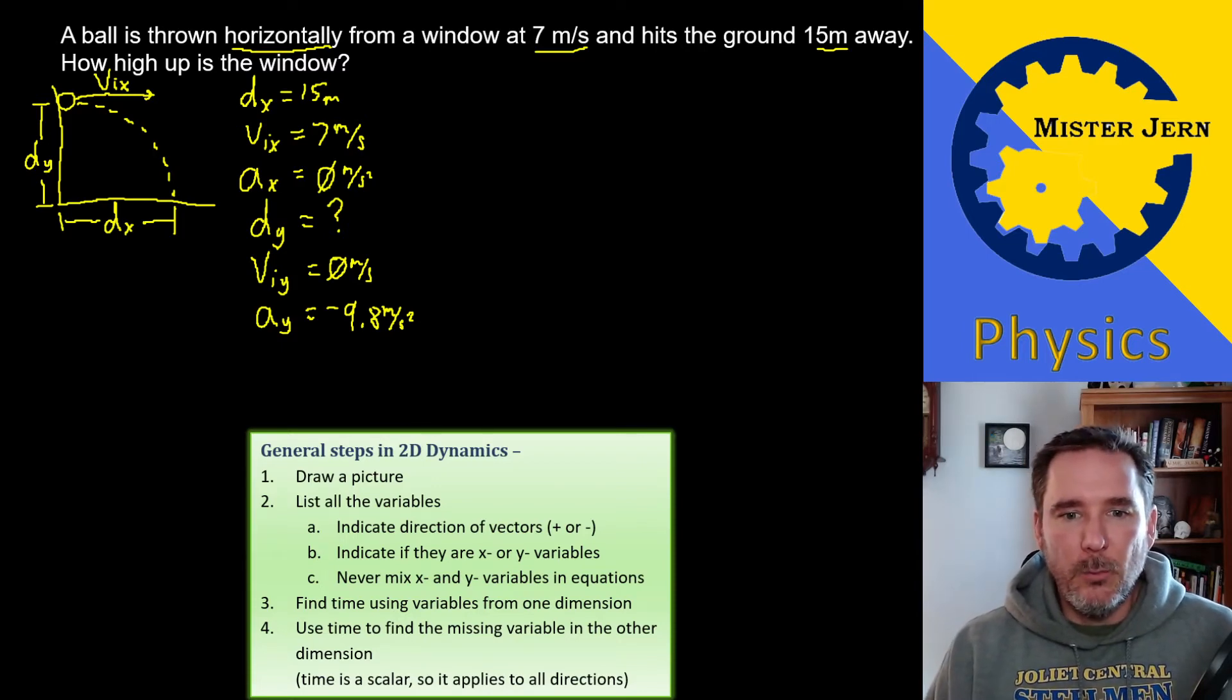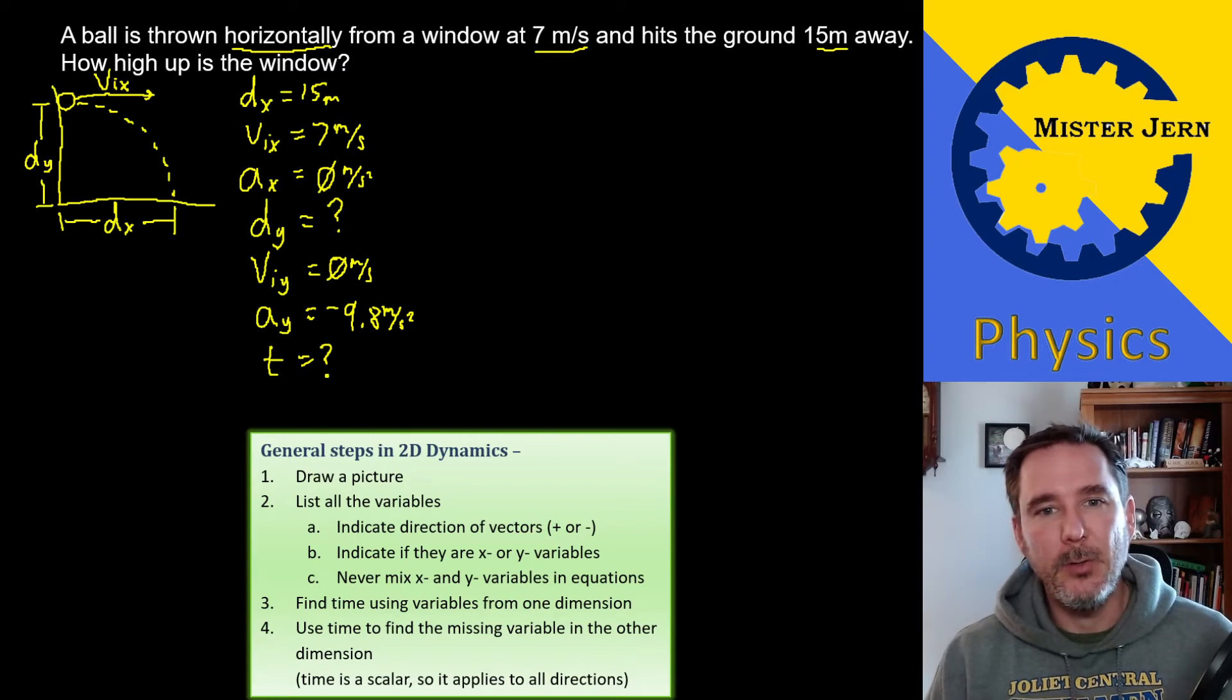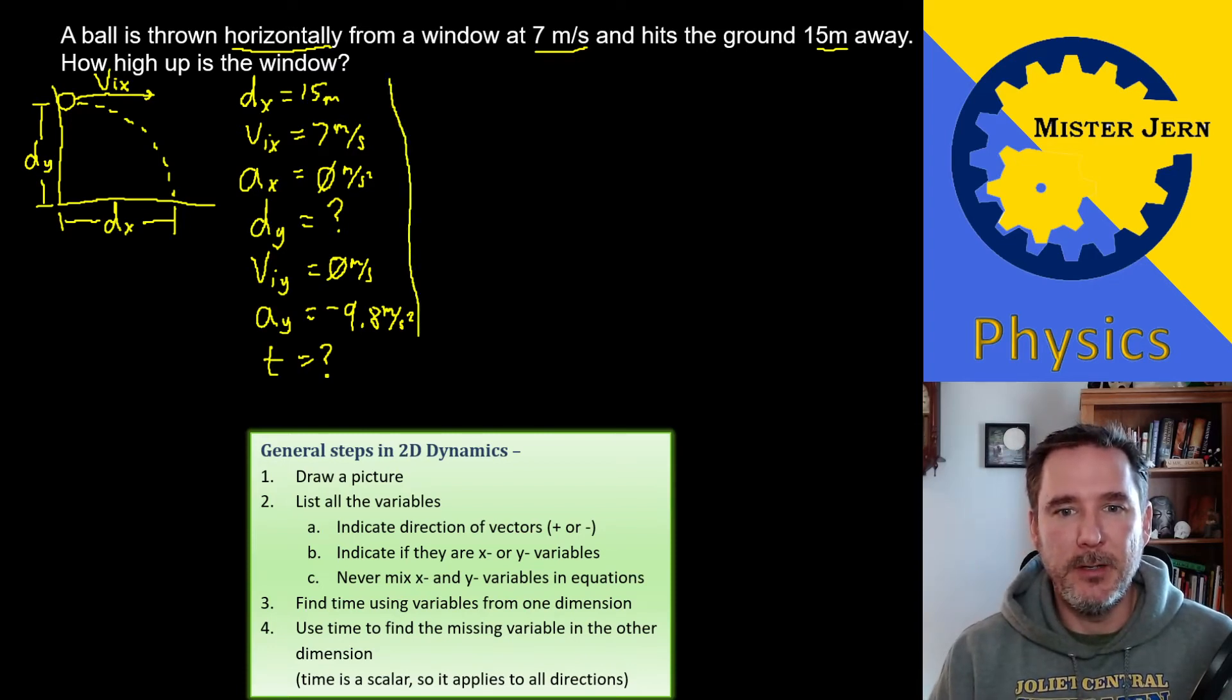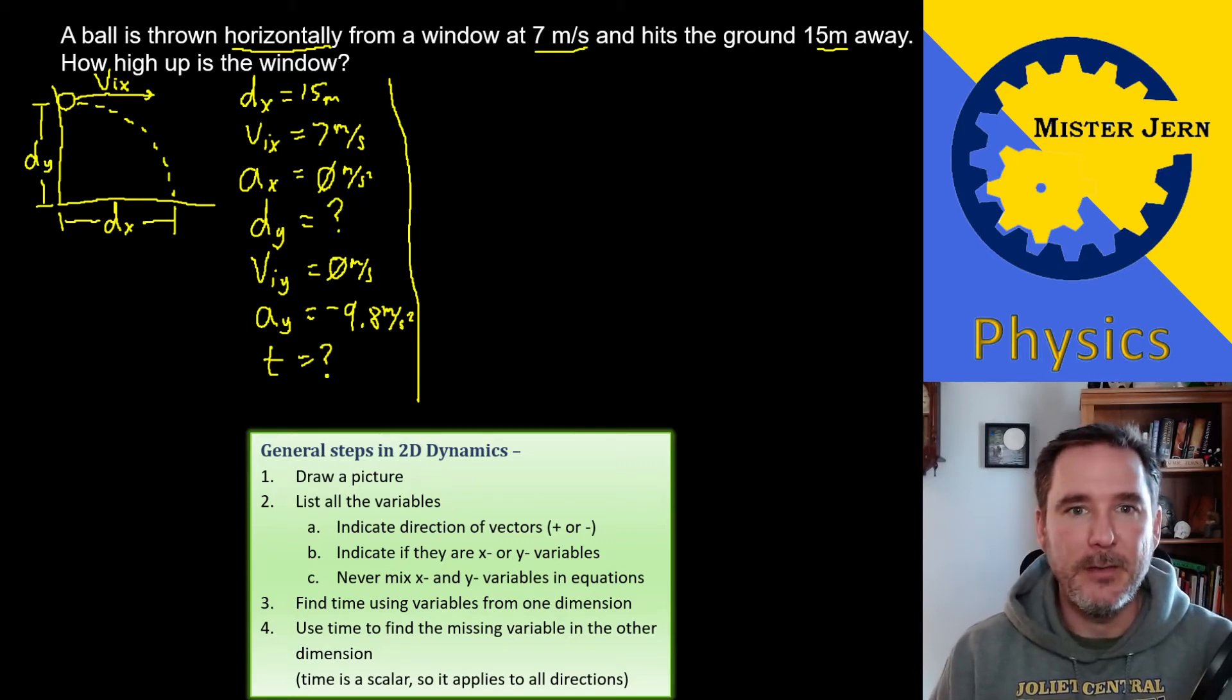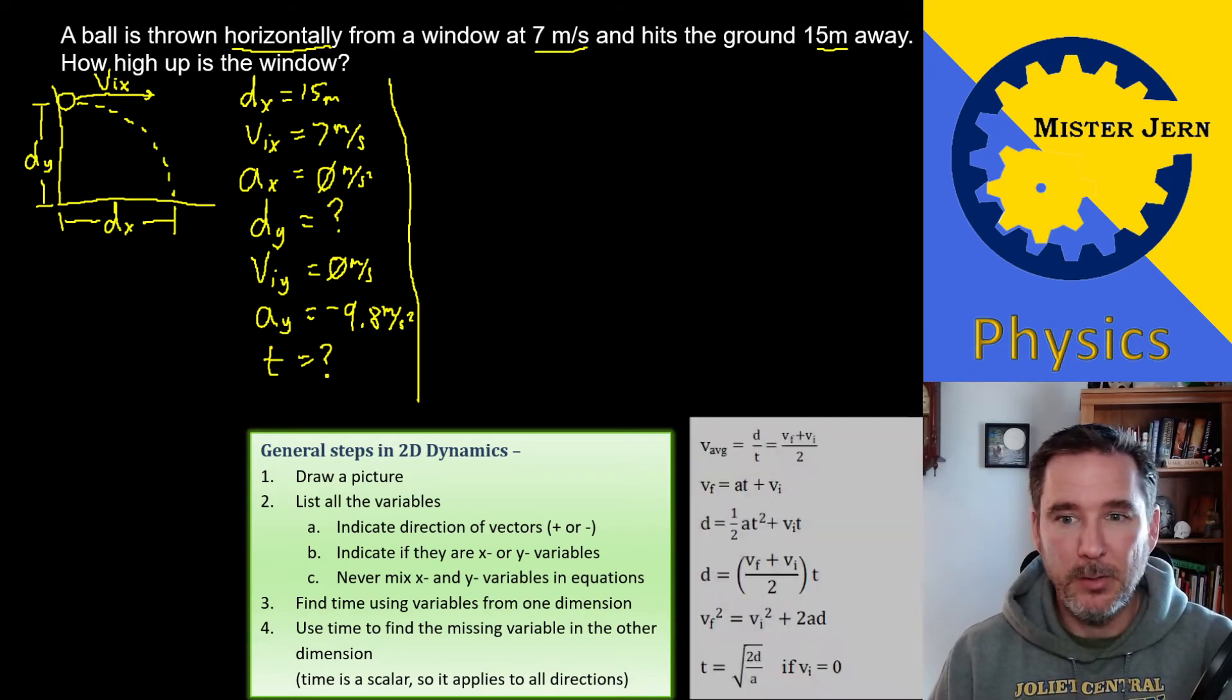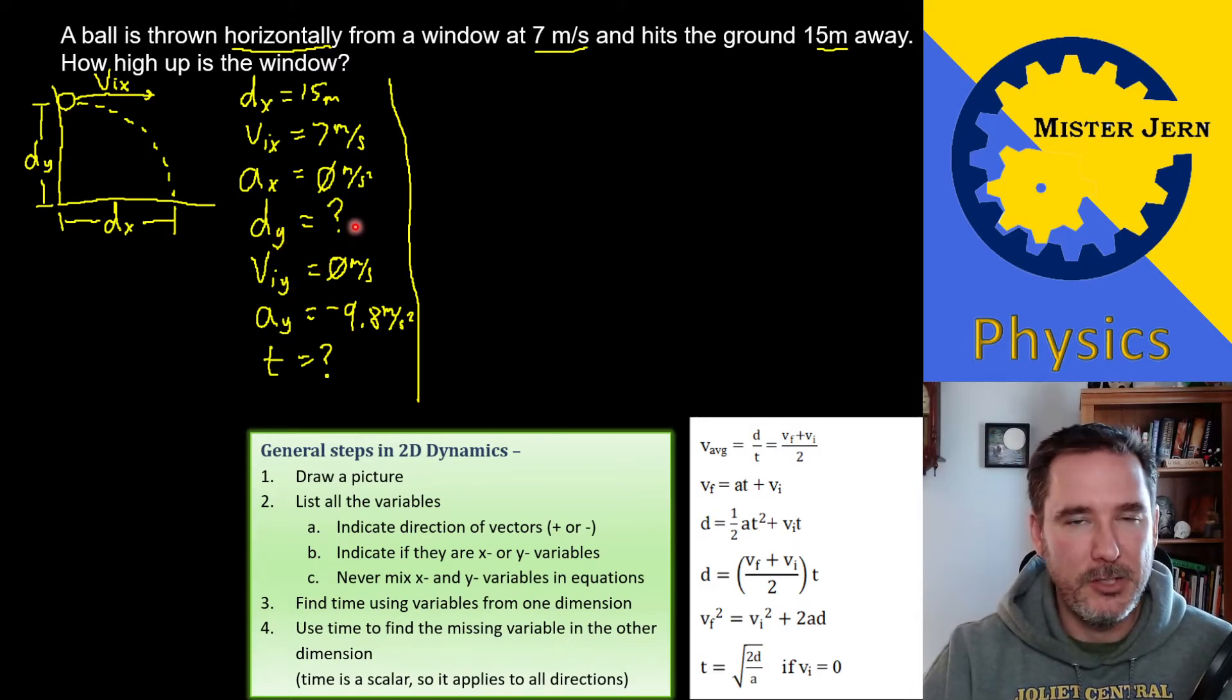One thing we're gonna have to do is we're going to have to find the time in the air. Okay, so let's just kind of separate all that out. So now we are on step 3: find time using variables from one dimension. We got a bunch of variables. How are we gonna find time? Well, we have a bunch of equations to choose from. So let's figure out which we should use. Should we use x's or should we use y's? Because our unknown is in the y dimension, we're gonna end up having to use x's.